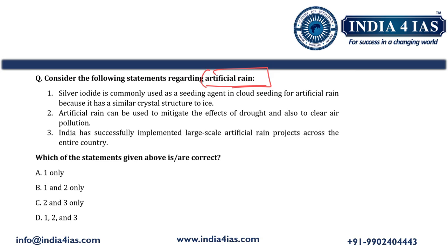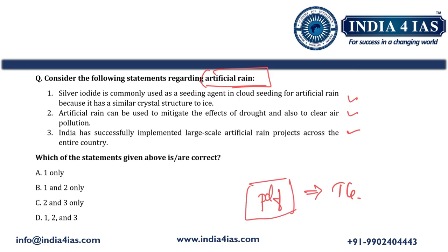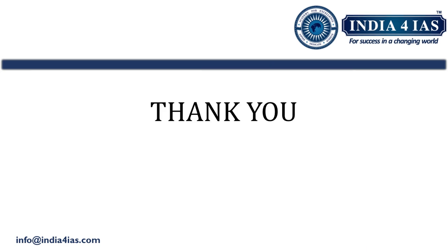So this is all about cloud seeding or artificial rain — its mechanism, techniques, chemicals used, applications, and challenges. Based on the topic discussed, we have provided one practice question with three statements. The answer and detailed explanation are available in the PDF handout, which you can download by joining our Telegram channel. The PDF also contains detailed notes of this video. Thank you for watching, see you in the next video. Till then, happy learning.